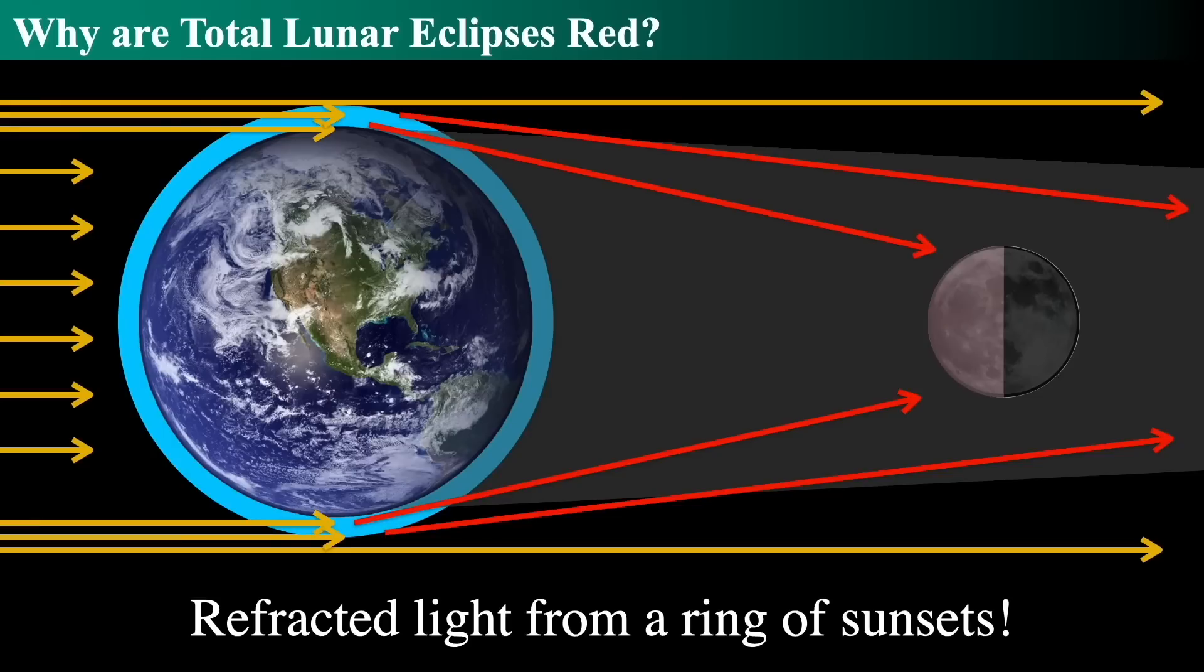In a total lunar eclipse, if you were looking from the moon back to the earth, you would see the atmosphere of the earth glowing red, because the earth's atmosphere scatters blue light better than red. So the light that gets passed through on this ring around the earth, that would be the atmosphere that you would see if you were on the moon looking towards the earth, it would look this bright, bright, bright red.